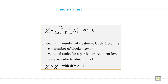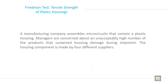For the Friedman test, the chi-square formula for manual calculation uses: C as the number of treatment levels in columns, B as the number of blocks in rows, Rj as the total rank for a particular treatment level, J as the particular treatment level, and chi-square with degrees of freedom C minus 1, where C is the number of columns.